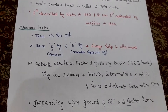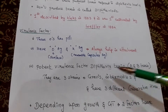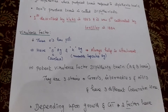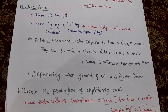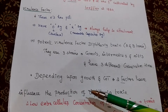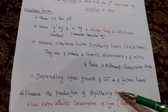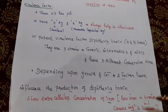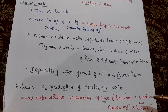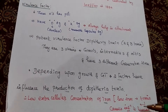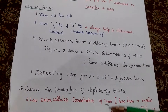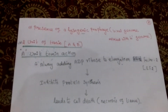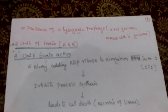The principal virulence factor is diphtheria toxin, which has two units: A and B. The organism has three biotypes — Gravis, Intermedius, and Mitis — each with different generation times. Two factors influence the production of diphtheria toxin: first, low extracellular concentration of iron in the environment triggers toxin production, causing infection. Second, the presence of a lysogenic prophage, meaning the viral genome is integrated with the bacterial genome.